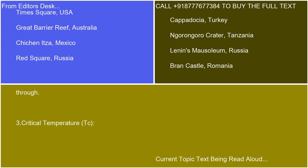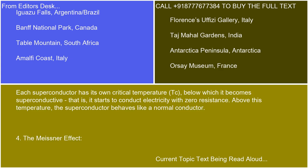Each superconductor has its own critical temperature, TC, below which it becomes superconductive — that is, it starts to conduct electricity with zero resistance. Above this temperature, the superconductor behaves like a normal conductor.